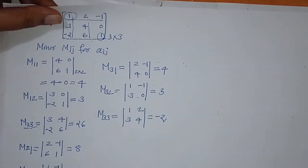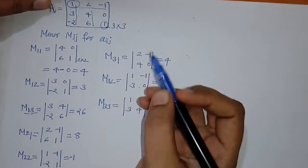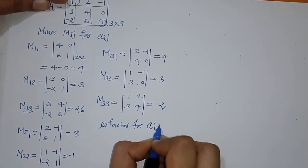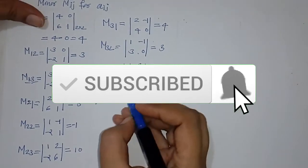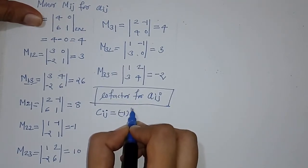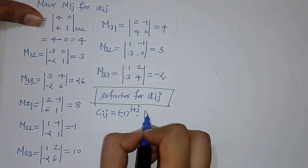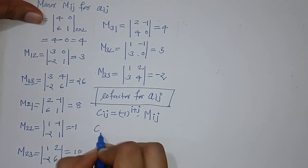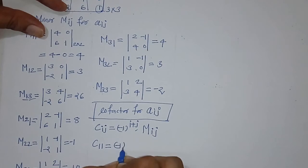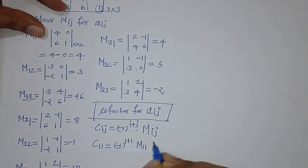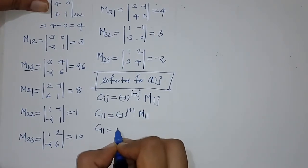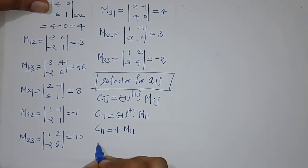We have now found all minors for these 9 elements. Next we find the cofactor for each element A_ij. The relation is: C_ij equals minus 1 raised to i plus j, multiplied by the minor M_ij. So for C_11, with i plus j equals 2, we get minus 1 raised to 2, which equals positive 1, giving C_11 equal to the minor value.